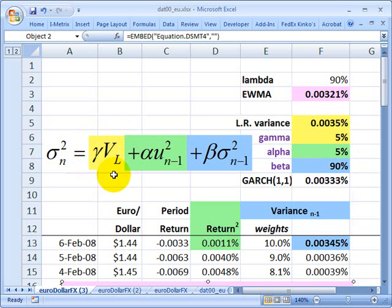Aside from the change in notation, we are really back to the exponentially weighted moving average. We've got alpha for a weight multiplied by a lagged squared return, just like we did with the exponentially weighted moving average. And we've got beta, the third weight multiplied by the lagged variance.